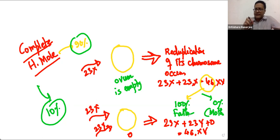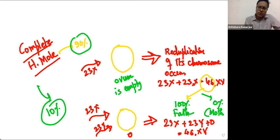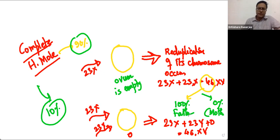So the reason why complete mole is diploid: the fertilization occurs of an empty ovum, and in complete mole the outcome is either 0 plus 23×2 = 46, or 0 plus 23 plus 23 = 46. Either way, the maximum is 46, so it is always typically diploid.